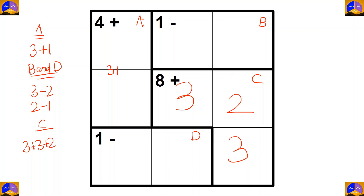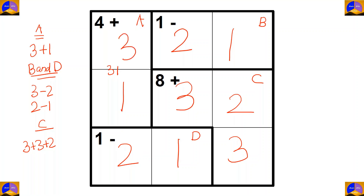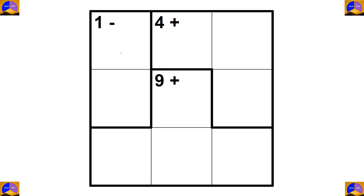For completing this column, it would be one. The option where one is present is two minus one, so here it would be two and here it will be three. For completing this row it would be two, here it would be one, and here three. Let's recheck: three plus one is four, two minus one is one, three plus two plus three is eight, and two minus one is one. So far so good.